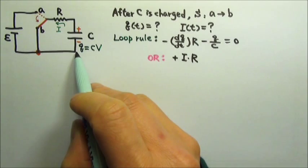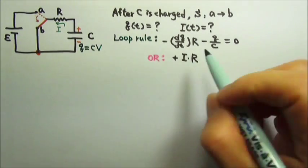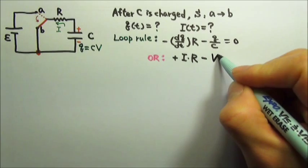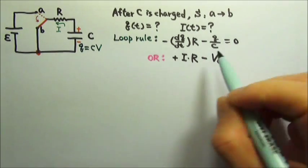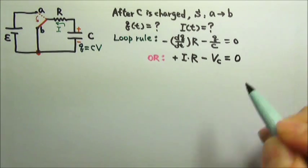And then I'm going from positive to the negative plate. The potential should go down by whatever voltage we have across the capacitor. Now I'm back to the starting point, so this delta V should equal zero.